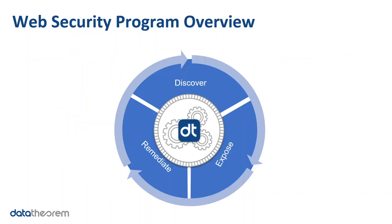There are three overall steps taken by the web product, and these steps happen continuously: discover, expose, and remediate. As you write or manage your modern web app, you may have hundreds of APIs being called on the backend. These will need to be secured across each endpoint. At the heart of the web product is a Data Theorem analyzer engine, which takes several actions to protect your web apps and prevent data breaches.